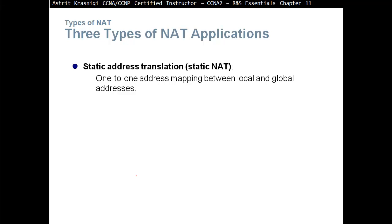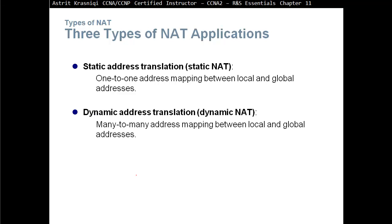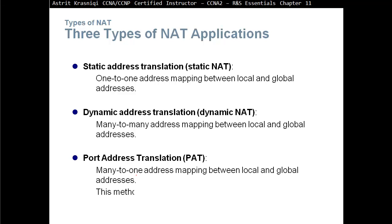Static NAT is still needed for outside-facing servers like web servers and email servers. We also have dynamic address translation — dynamic NAT — which is many-to-many address mapping between local and global addresses. For example, we can map 100 private addresses to maybe 10 public addresses. And we can have port address translation, which is many-to-one address mapping between local and global addresses.